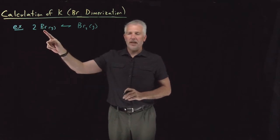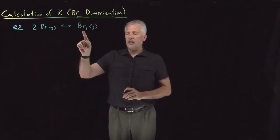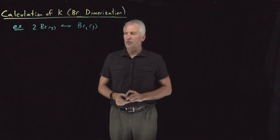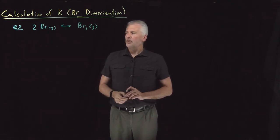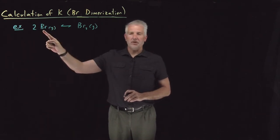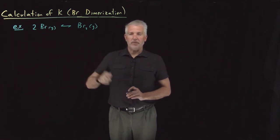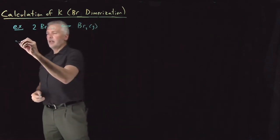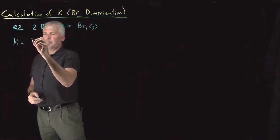In this case, two Br, two bromine atoms, combine or dimerize to form bromine gas, Br₂, diatomic bromine gas. So we know how to write down partition functions for monatomic species just as well, or even easier than we do for diatomic species. So we can also write down the equilibrium constant for this reaction.